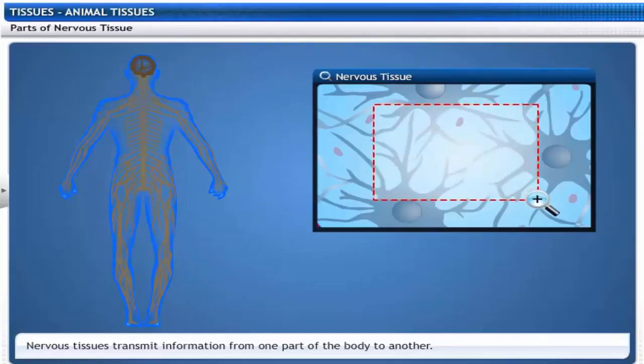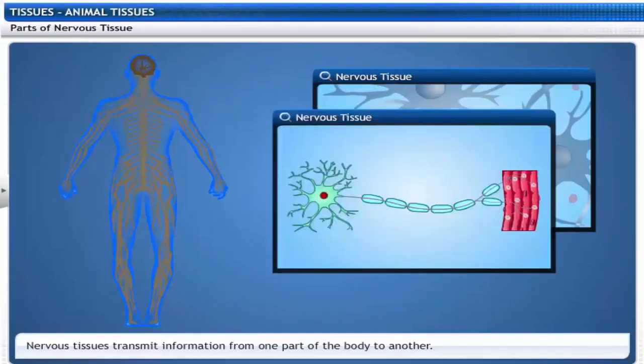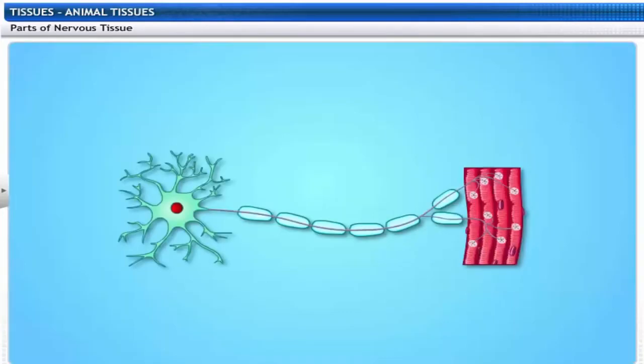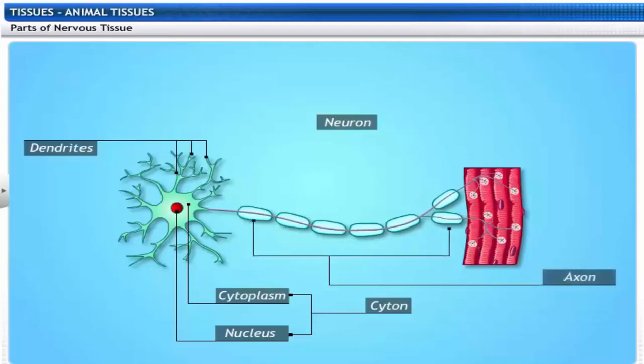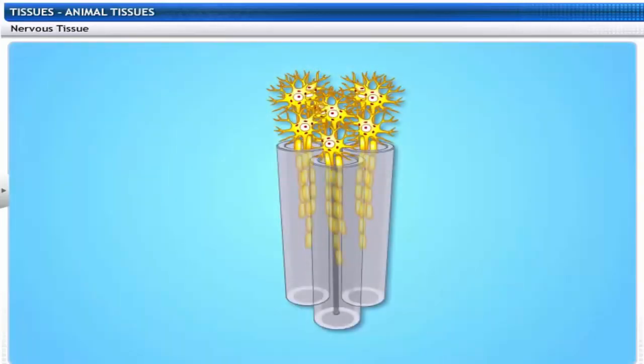Let's take a closer look at nervous tissues. Nervous tissues have elongated cells called neurons. Each neuron consists of a cell body with a nucleus and cytoplasm called cyton, and elongated hair-like extensions called dendrites. One of the dendrites called axon is very long. Neurons join end to end to form nerve fibers.